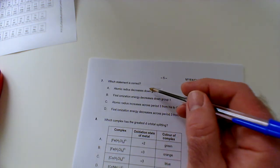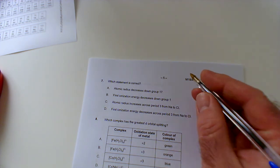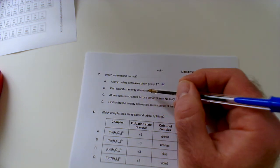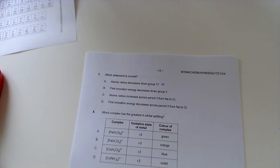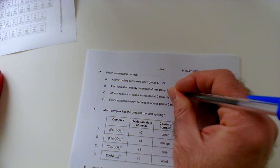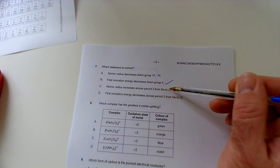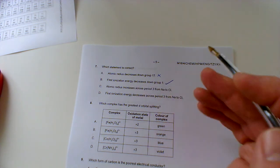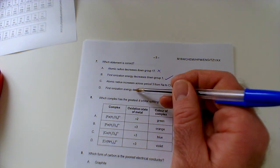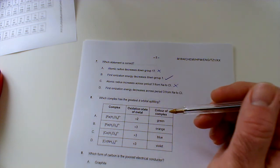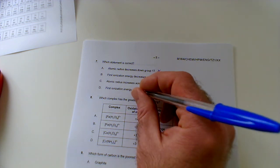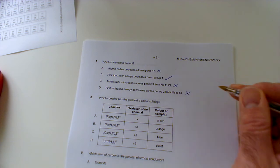Number seven: which statement is correct? Atomic radius decreases down group 17—well, it doesn't matter what group it is, atomic radius increases going down the group because you start a new energy level, so it's not that one. First ionization energy decreases down the group—again, it doesn't matter what group it is, first ionization energy always decreases. It's easier to remove an electron as you go down the group because it'll be in a shell which is further from the nucleus and less strongly attracted. So that's looking good. Atomic radius increases across period three from sodium to chlorine—well no, it actually decreases because you're adding electrons to the same shell but increasing the nuclear charge, so they get pulled in more tightly. First ionization energy decreases across period three—no, first ionization energy always does the opposite to what atomic radius is doing. If atomic radius is decreasing, that makes it harder to remove an electron because of the bigger nuclear charge, so first ionization energy actually increases across a period. So we're looking for B.